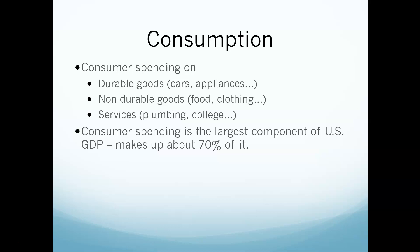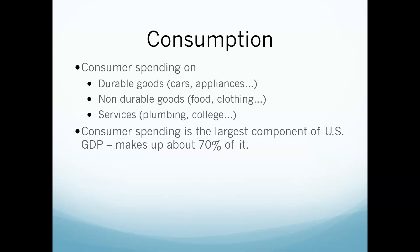Consumer spending — the C — is what you buy: goods and services. For the United States, consumers make up 70% of all GDP; we're very much consumer-oriented. Gross private investment is business spending — any time businesses spend money investing in capital to make a profit. That includes buying computers, building factories, wanting a positive return. Any new construction falls under this category, even new homes fall under IG.